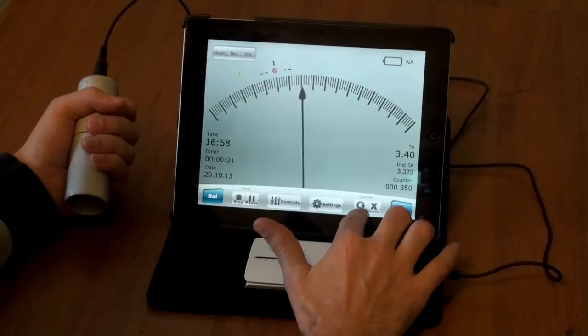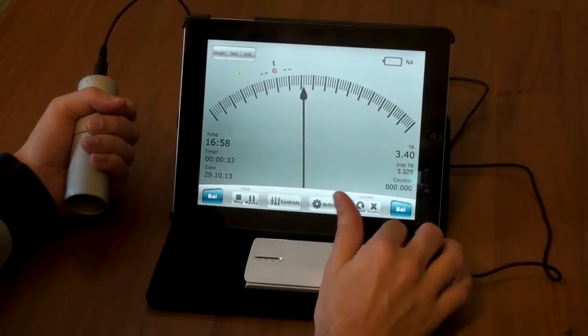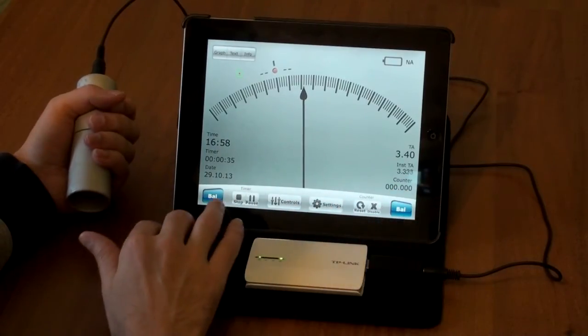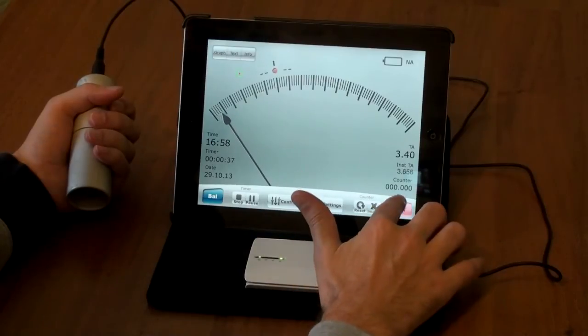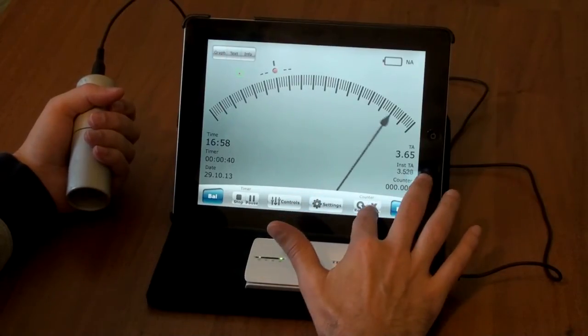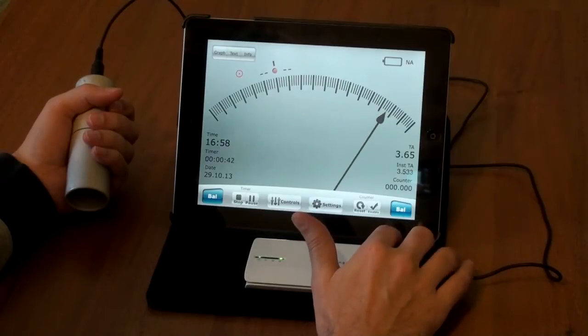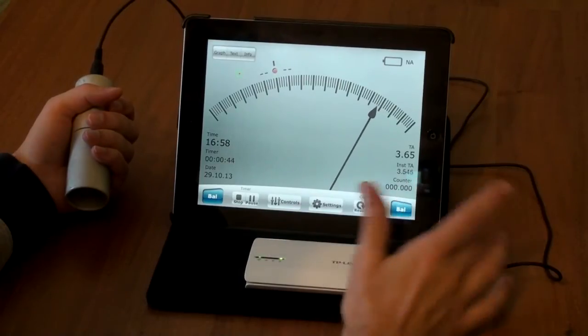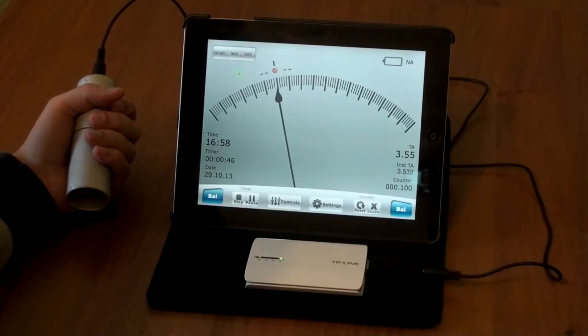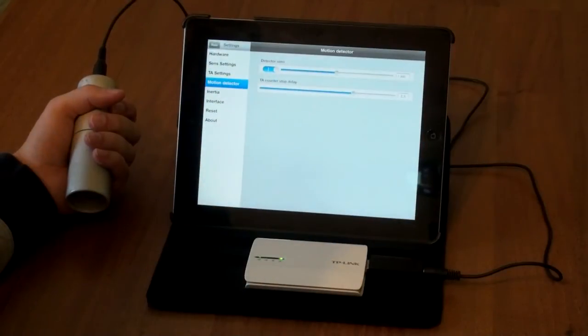I can reset counter. It becomes 0. And also disable it if I want. It becomes 0.35. Let's go to the next settings.